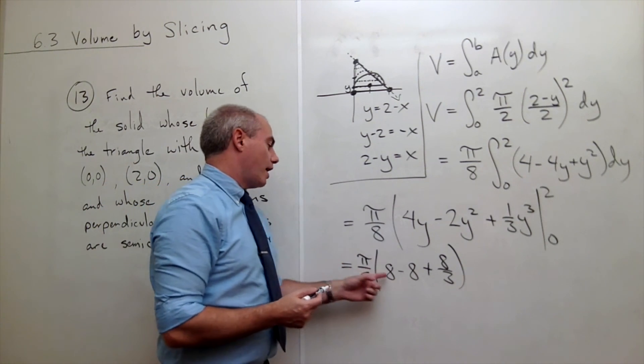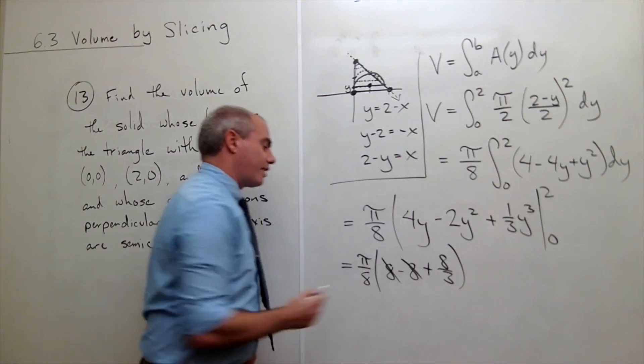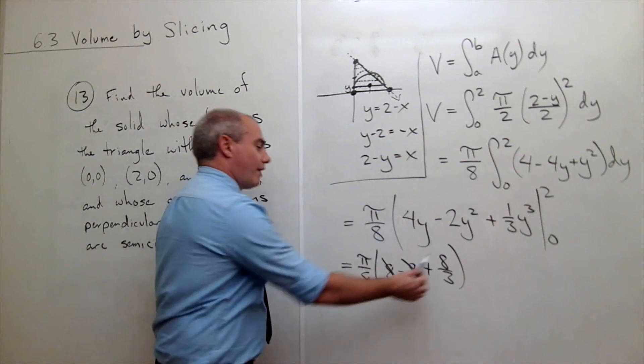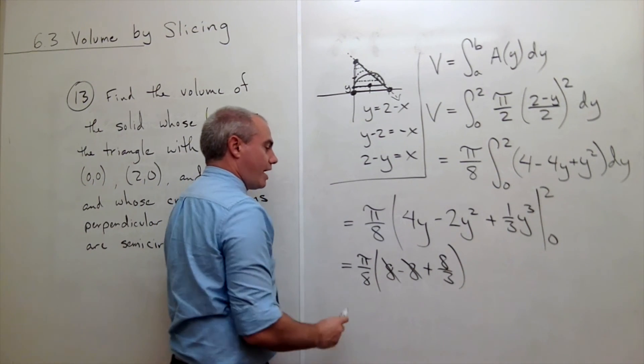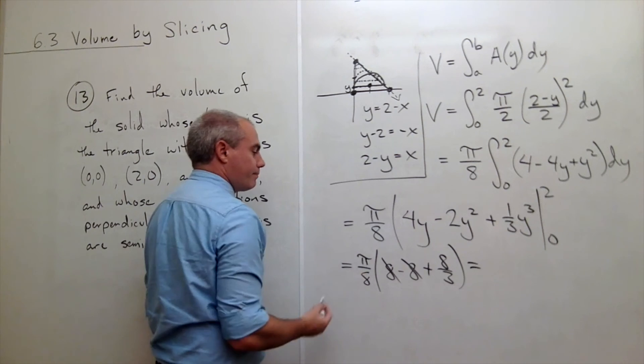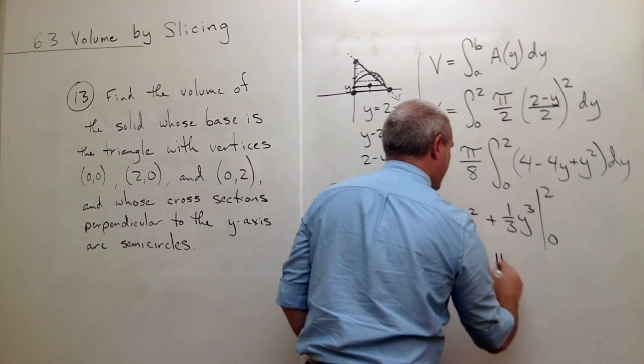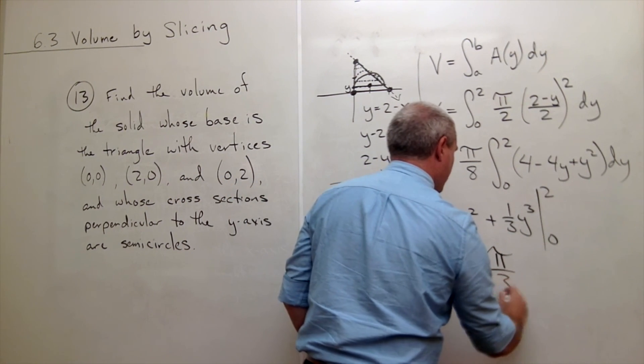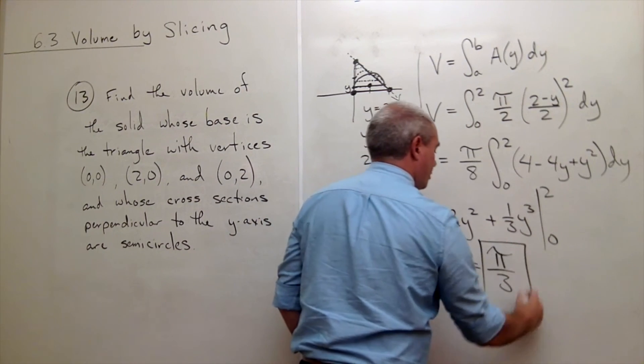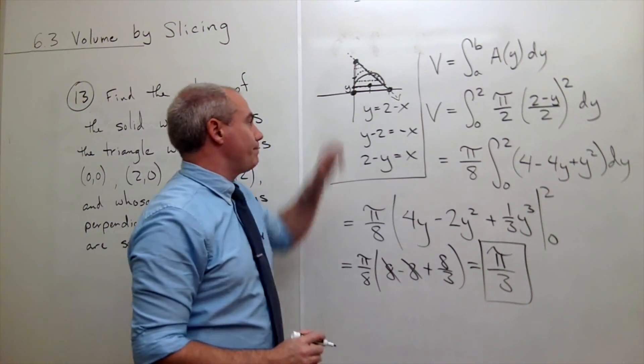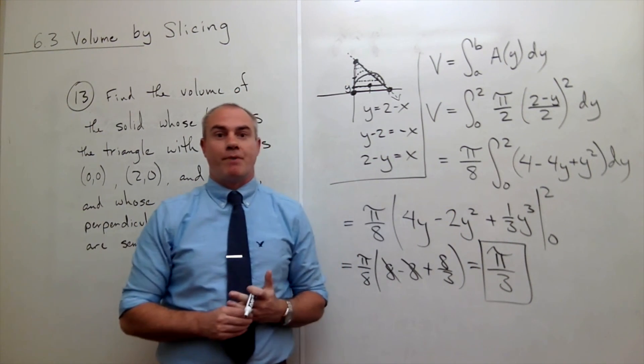And now I have an 8 minus 8. I can do that one. And then I just have 8/3 times π over 8. You multiply 8/3 by π over 8 and you just get π over 3. So the volume of the shape that we formed up here should be π over 3.